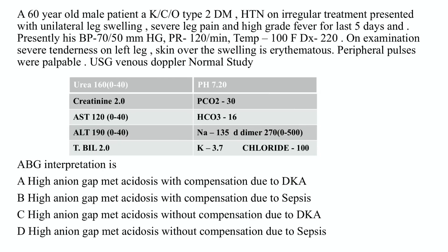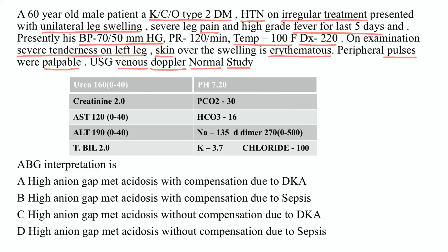A 60-year-old male, known case of diabetes and hypertension on irregular treatment, presented with unilateral leg swelling, severe leg pain, and high-grade fever for the last five days. Presently his BP is 70/50, pulse rate 120, temperature 100°F, dextrose 220. On examination, severe tenderness was present on the left leg and skin over the swelling is erythematous.